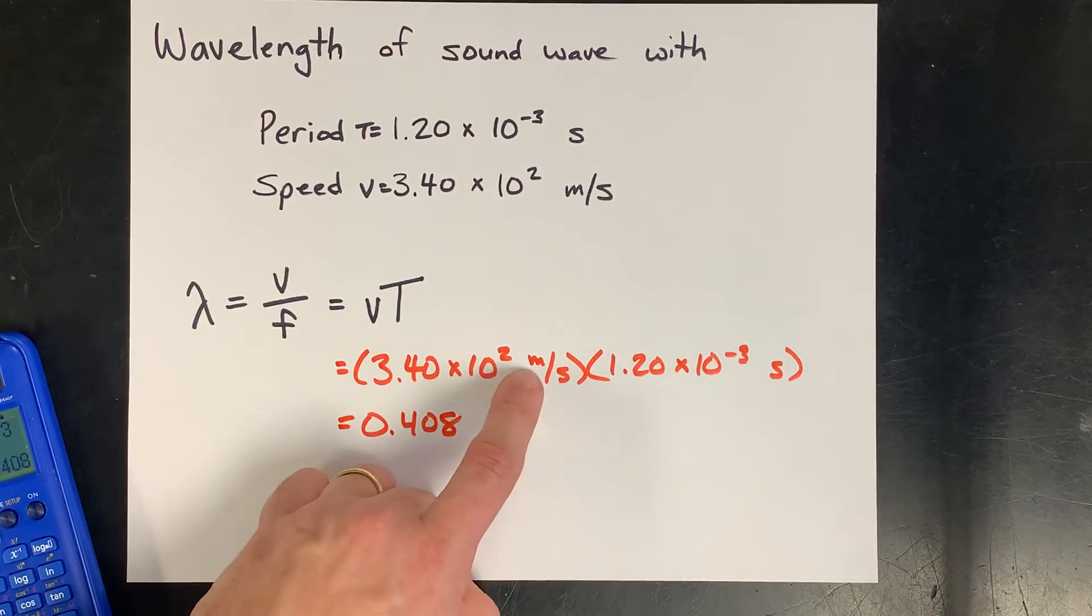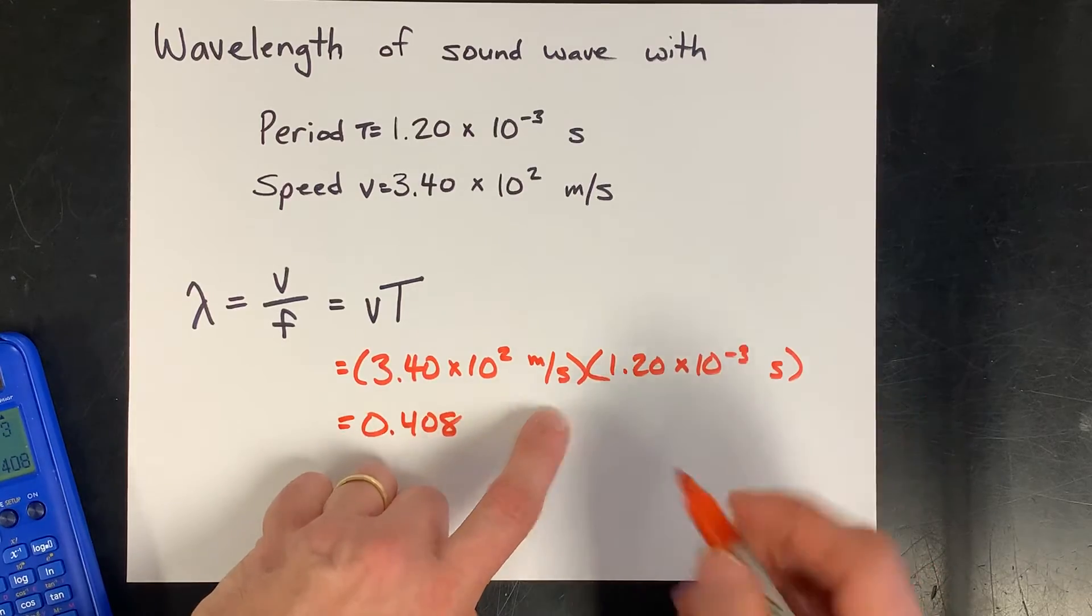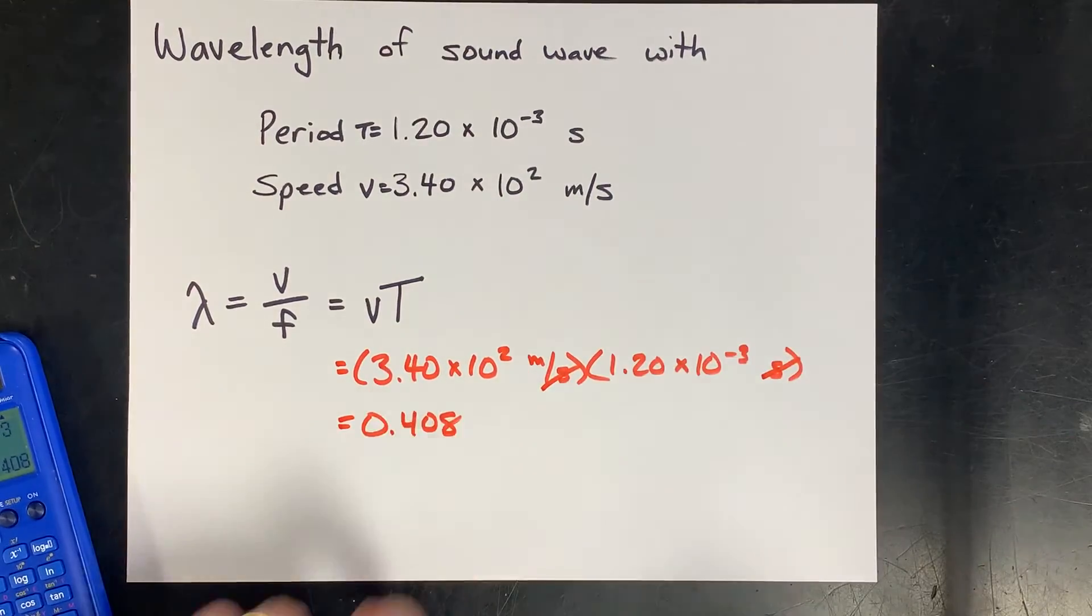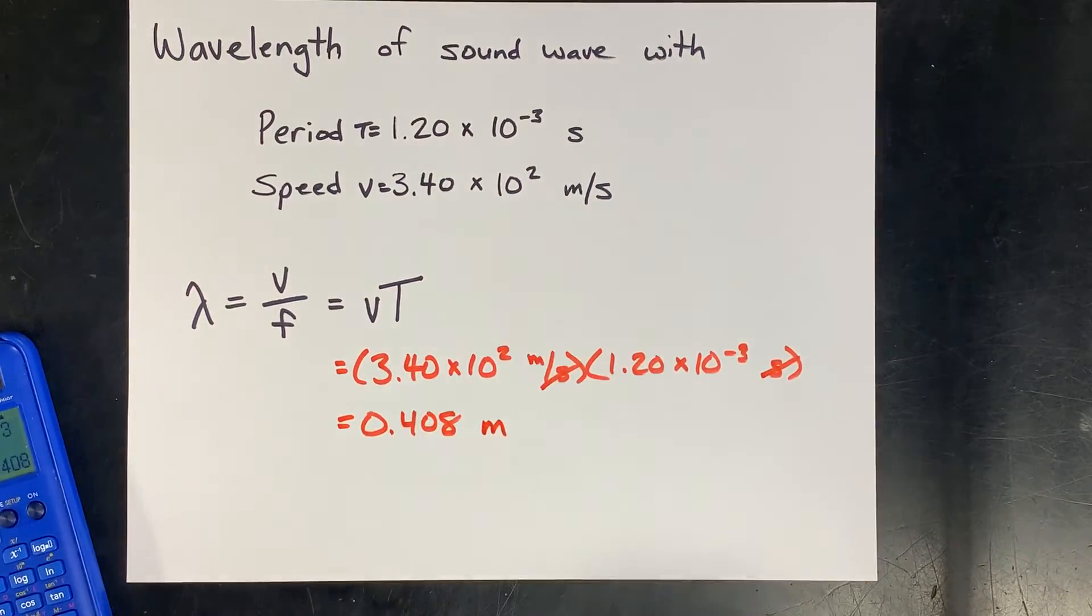That leaves us with 0.408. Now for units, meters per second times seconds, those seconds cancel each other out, and you are left with just meters.